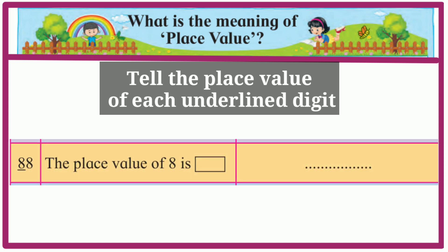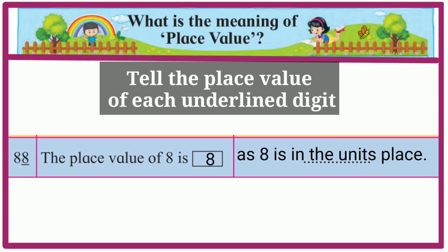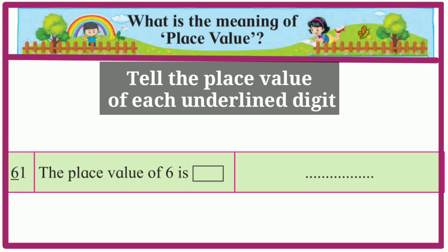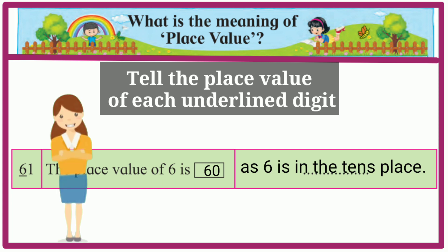88: the place value of the first 8 is 80, as 8 is in the tens place. 88: the place value of the second 8 is 8, as 8 is in the units place. 61: the place value of 6 is 60, as 6 is in the tens place.